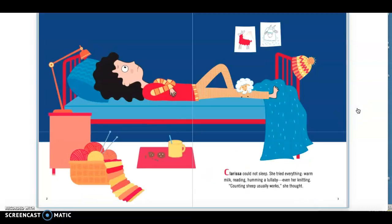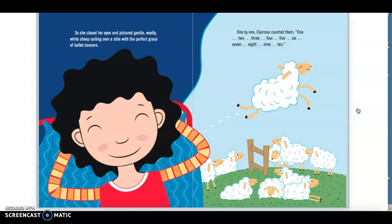Clarissa could not sleep. She tried everything. Warm milk, reading, humming a lullaby, even knitting. Counting sheep usually works, she thought. So she closed her eyes and pictured gentle, wooly, white sheep sailing over a stile with the perfect grace of ballet dancers. One by one, Clarissa counted them.